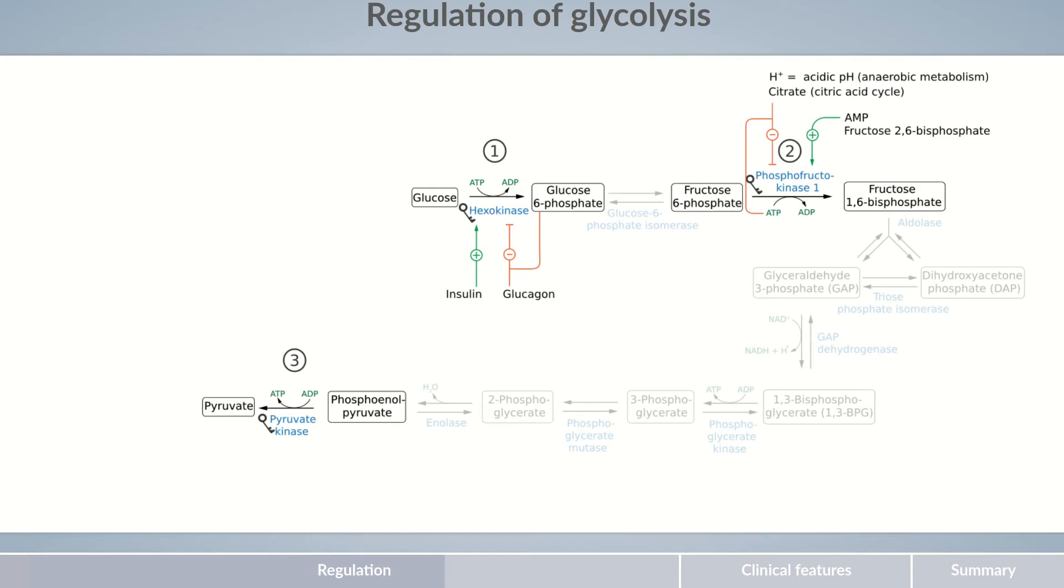Fructose-2,6-bisphosphate is not an intermediate of glycolysis or another energy metabolism process, though it probably strongly reminds you of fructose-1,6-bisphosphate. Although both molecules are very similar and only differ in the position of one phosphate group, they are not interconverted. Let's look at what's important in this context. The activation of phosphofructokinase-1 by fructose-2,6-bisphosphate helps in the tissue-specific hormonal regulation of glycolysis.